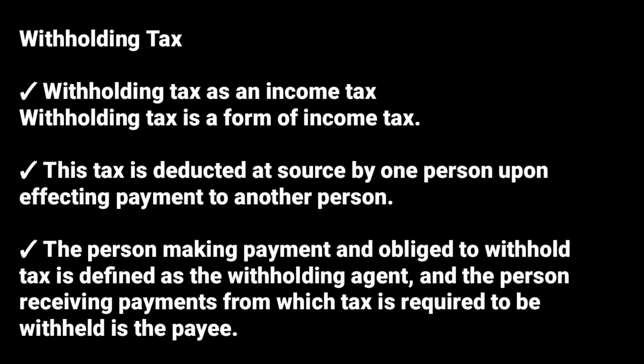The person making the payment and obliged to withhold taxes is defined as the withholding agent. So in an employment relationship, the employer is the withholding agent. And the person receiving payments from which tax is required to be withheld is the payee. So the employee is the payee and the employer is the withholding agent.